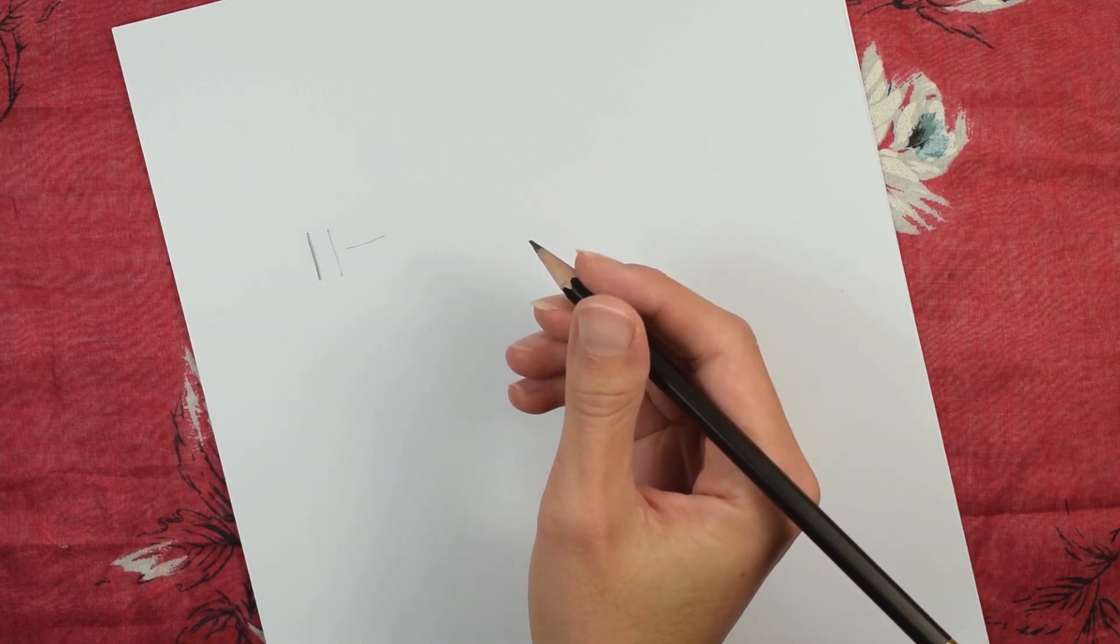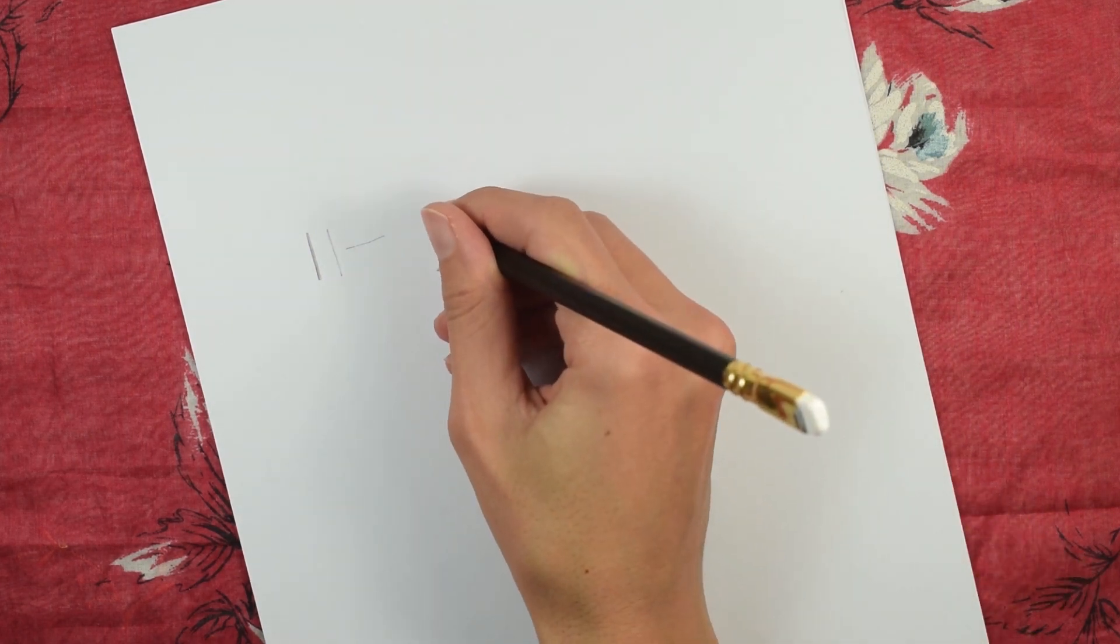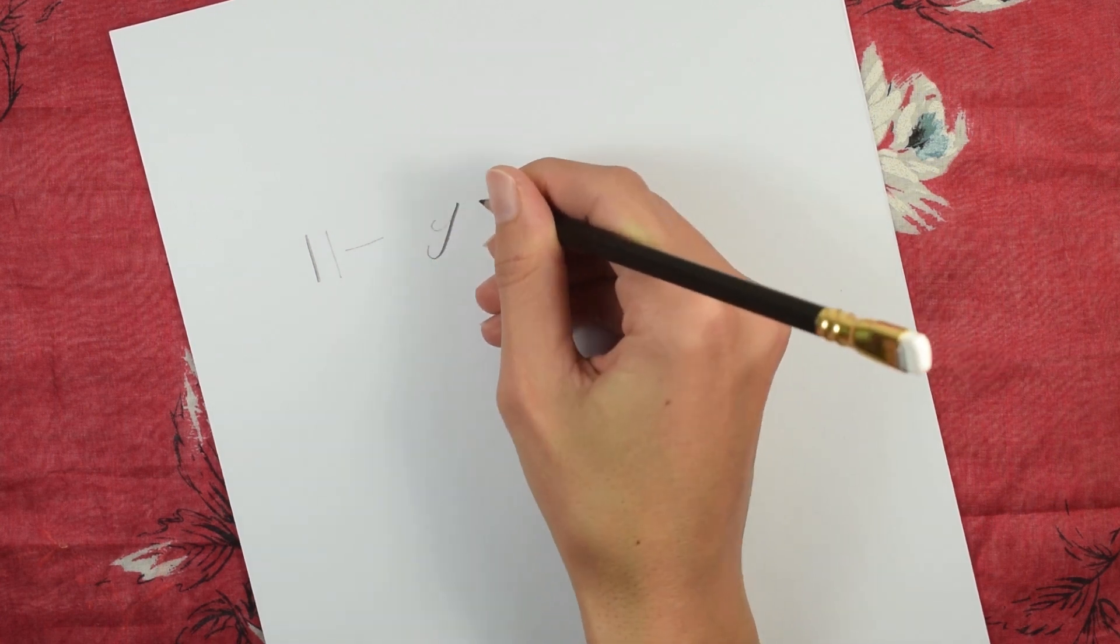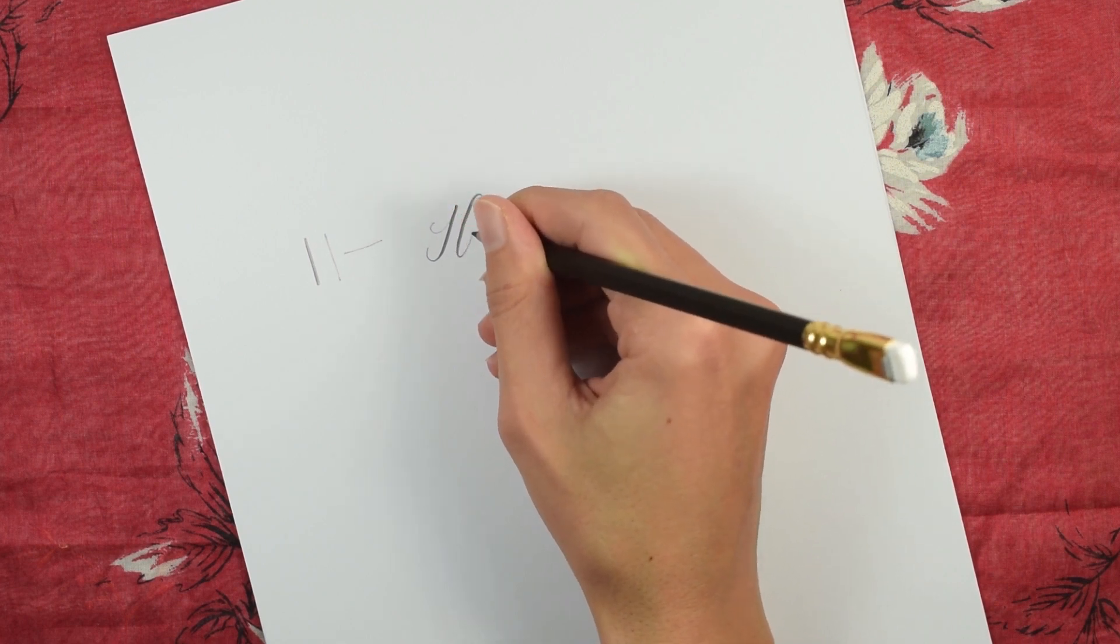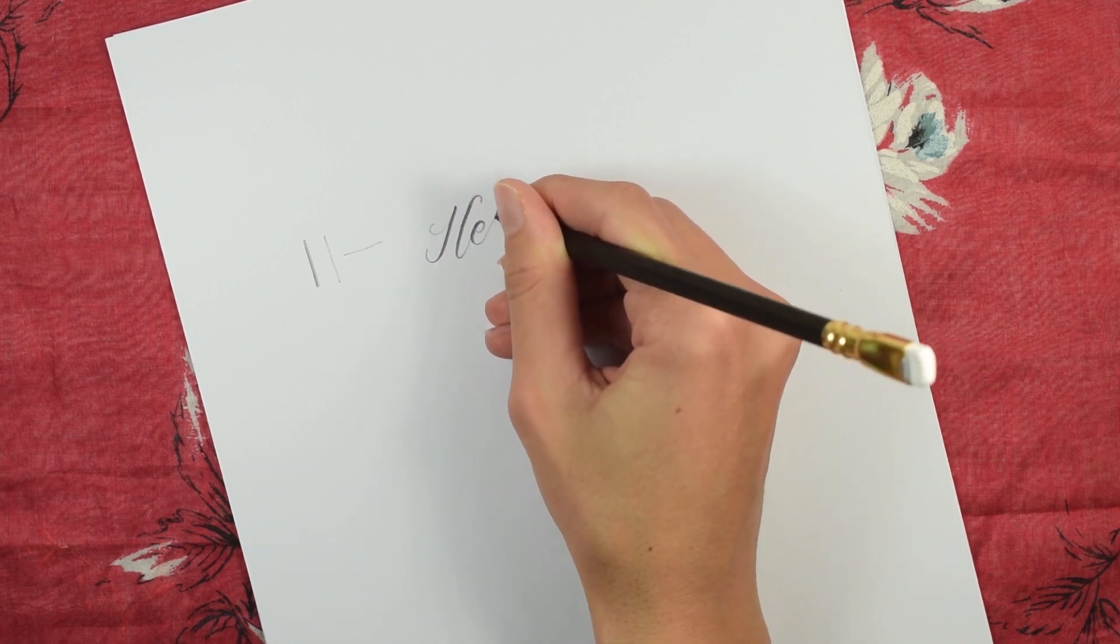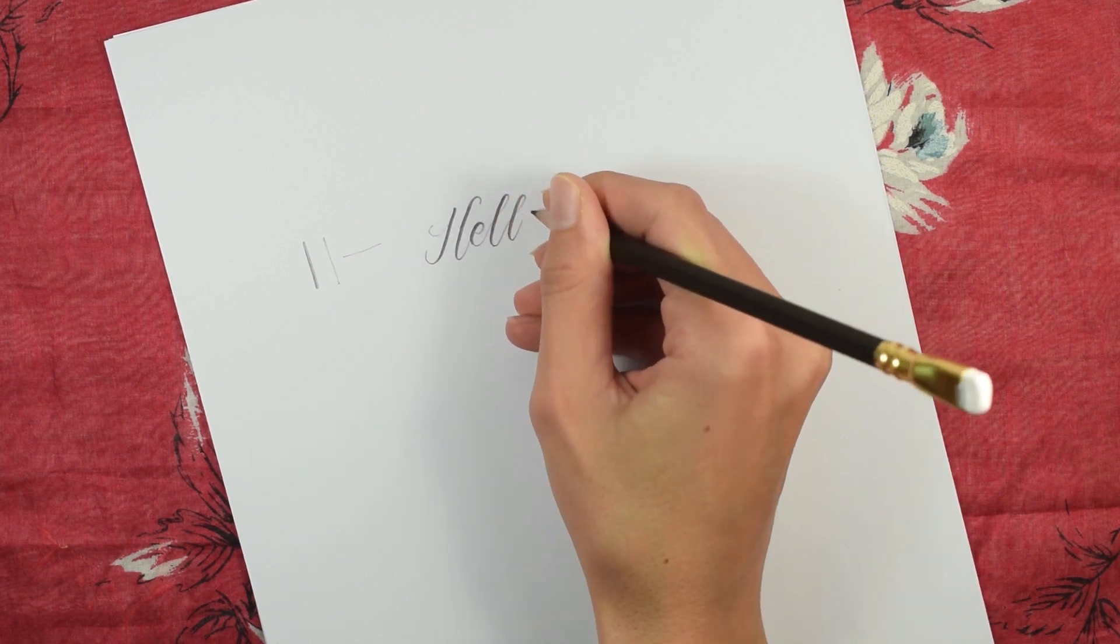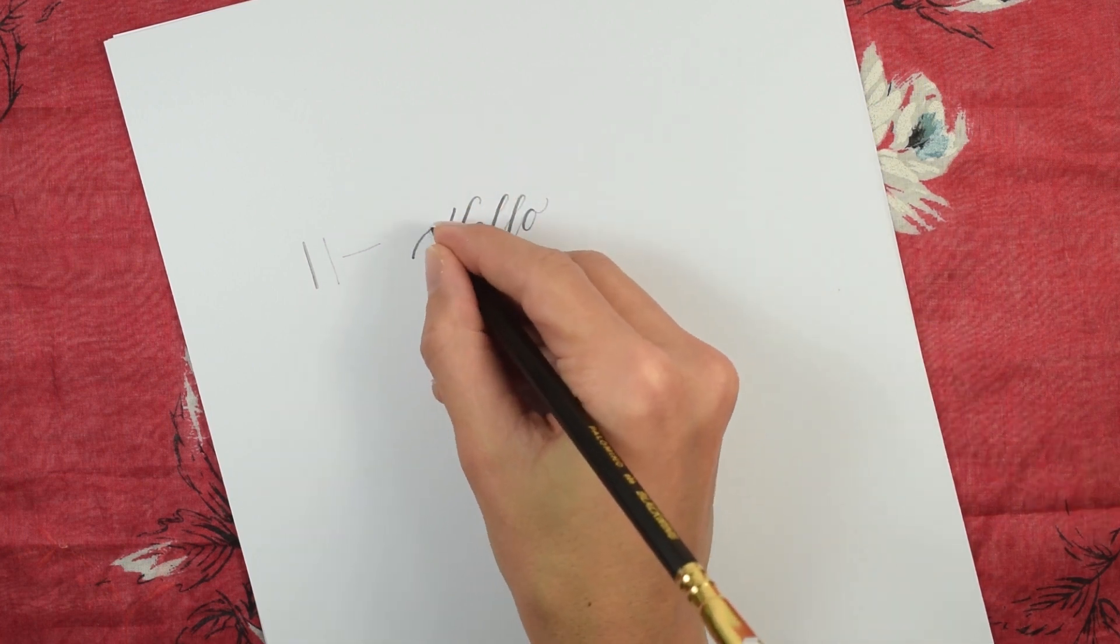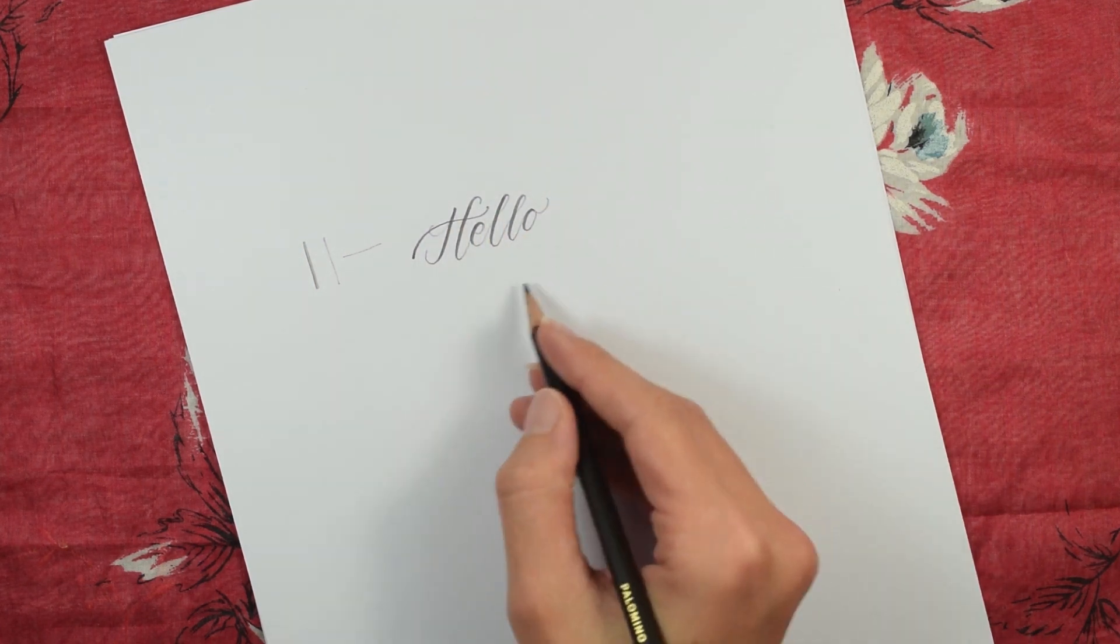So if we try to write a word like, hello, this is how it will go. You can see that I'm applying pressure on these down strokes, letting up on the up strokes. And here you have a word where you have this beautiful stroke variation.